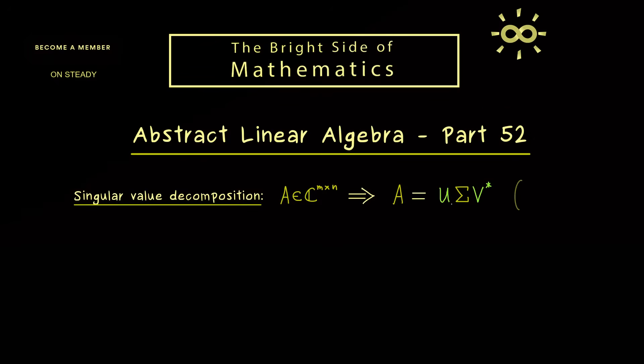But before we do that, please first recall that the singular value decomposition of A and A star are connected. Indeed if you have the one, you also have the other one immediately. So only the roles of V and U are exchanged. And please note that the only difference between Σ star and Σ is the shape in the rectangular form. The non-zero entries are exactly the same and they are just on the diagonal.